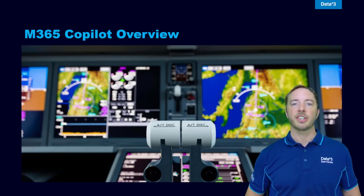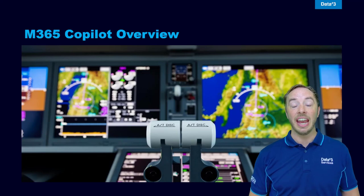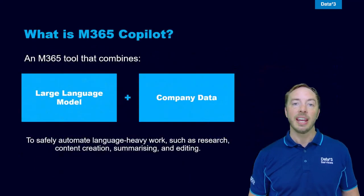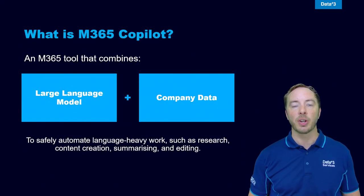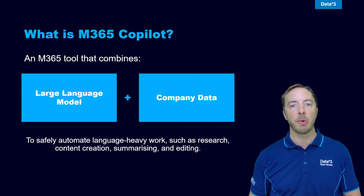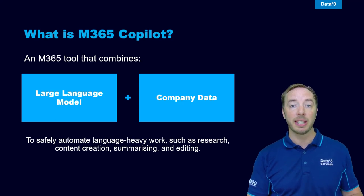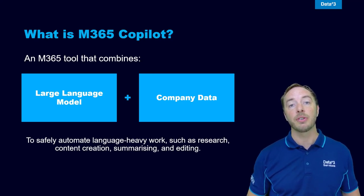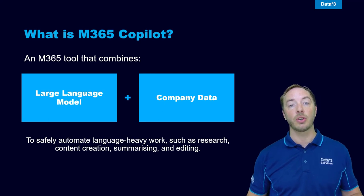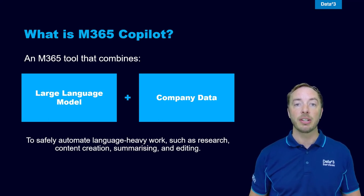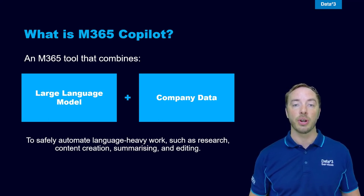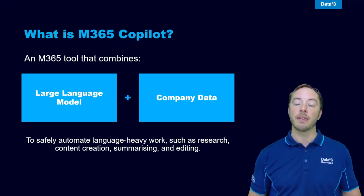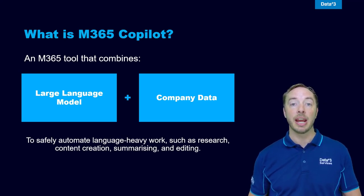In this section we'll take a look at a high-level overview of what M365 Copilot is and how it actually works. In essence, M365 Copilot is a marriage between an AI-powered large language model such as ChatGPT and your company data. This allows you to automate language-heavy work such as content creation, research, editing, etc., all the while knowing that none of your company data is being shared externally.